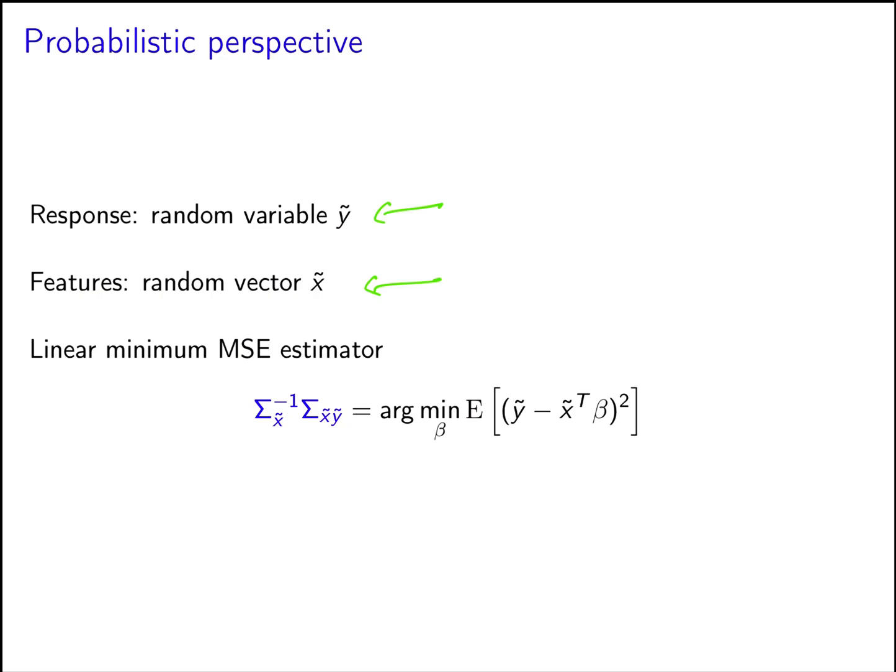Basically, we take a linear combination of the features x with a constant vector, and we derived that the best constant vector is given by the inverse of the covariance matrix of the features applied to the cross-covariance between the features and the response.